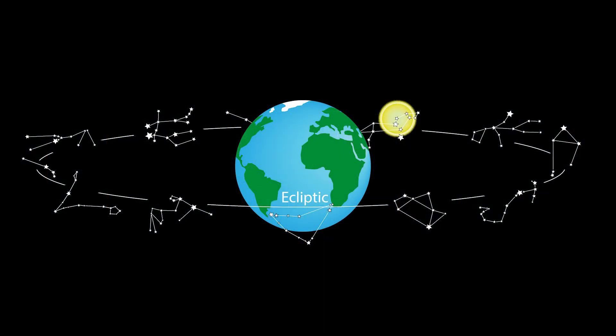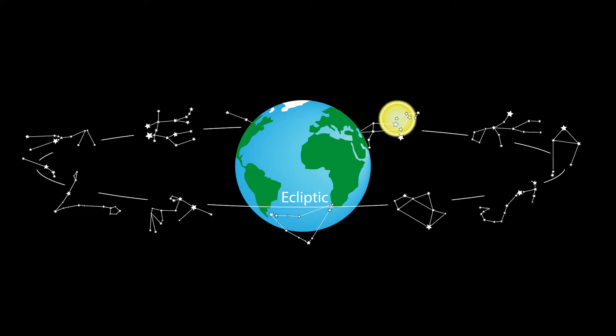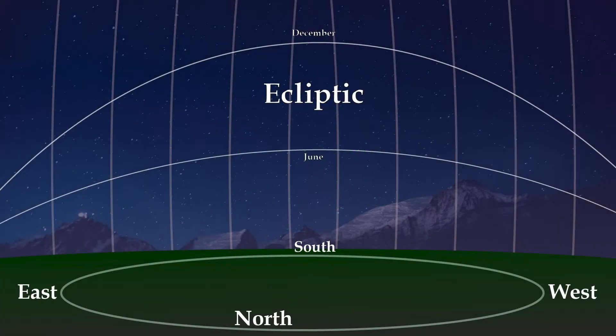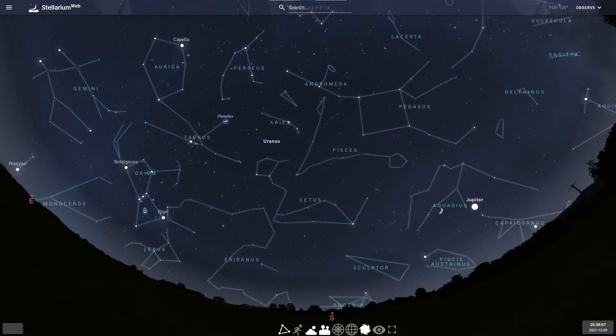That imaginary line traced by the sun, which we call the ecliptic, reaches its nighttime peak in December. Remember, due to the Earth's tilt, a low daytime sun means a high nighttime ecliptic. This is why Aries and its zodiacal neighbors rise pretty high in the sky compared to the summer constellations.